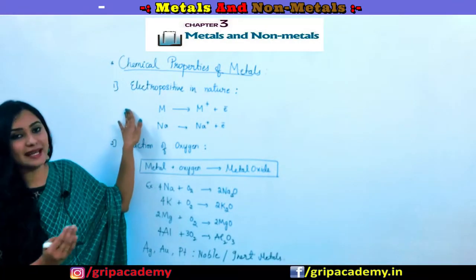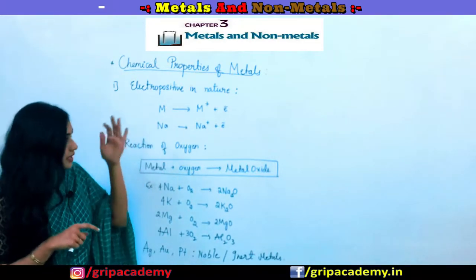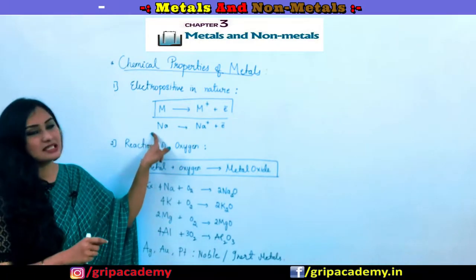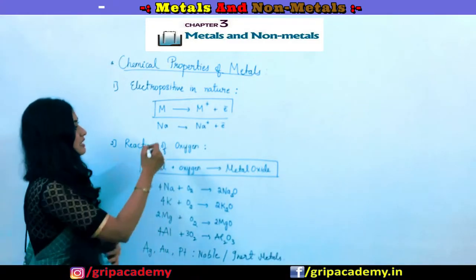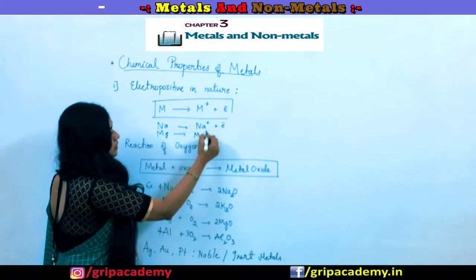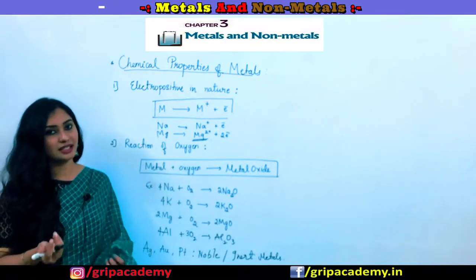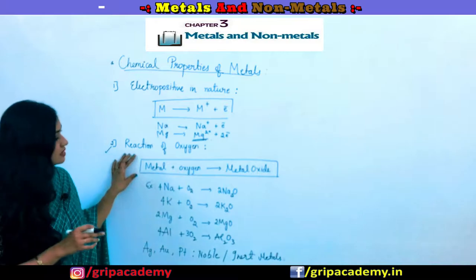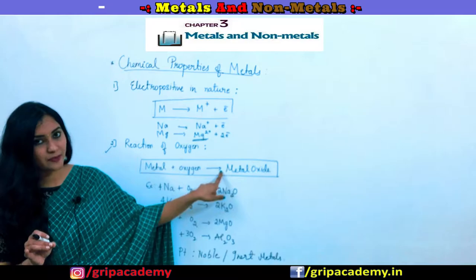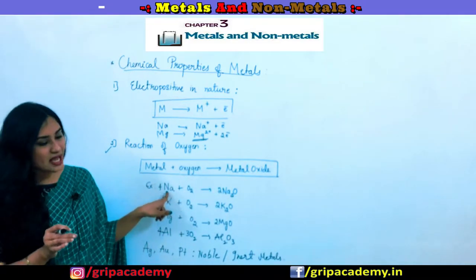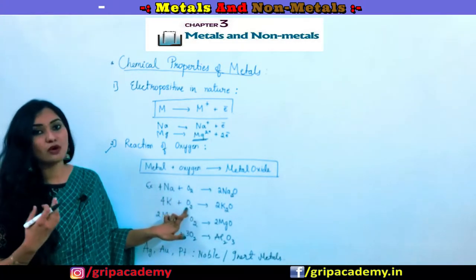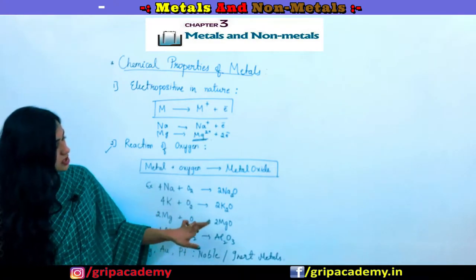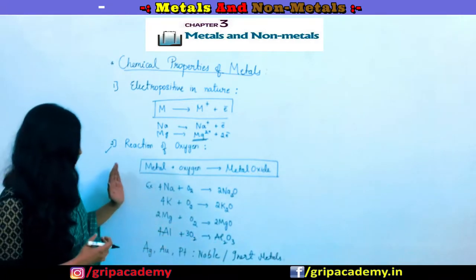Now let us discuss chemical properties of metals. All metals are electropositive in nature — they lose electrons and become positively charged ions. Sodium loses one electron and becomes Na⁺; magnesium loses two electrons and becomes Mg²⁺ — a cation. Regarding the reaction with oxygen: in general, metals react with oxygen to form metal oxides. Sodium reacts with oxygen to form sodium oxide; magnesium and aluminium respectively form magnesium oxide and aluminium oxide.